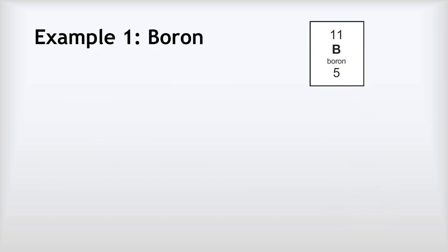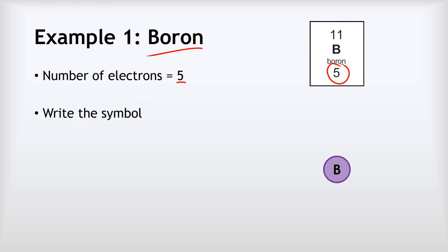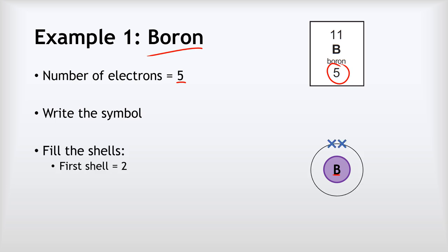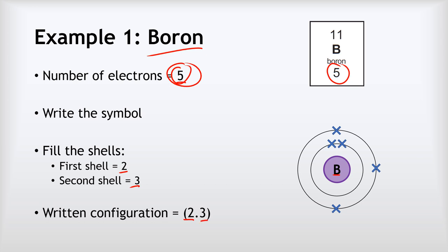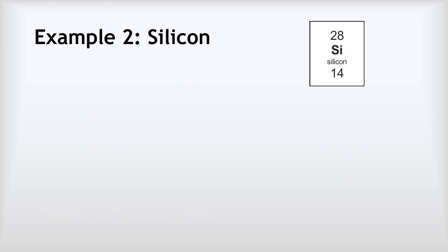So how do you work out an electron configuration for yourself? Let's use boron as an example. Boron has atomic number 5, which means it has five electrons. We write the symbol B in a circle, then fill the shells from the inside out. Two electrons go in the first shell — it's now full — then the remaining three go in the second shell. We write that configuration as 2.3. It doesn't matter where exactly in each shell the electrons are placed.